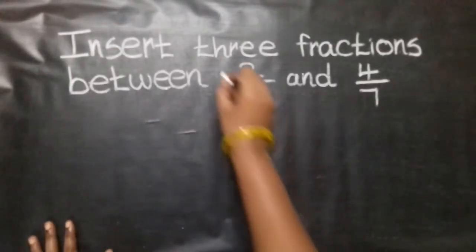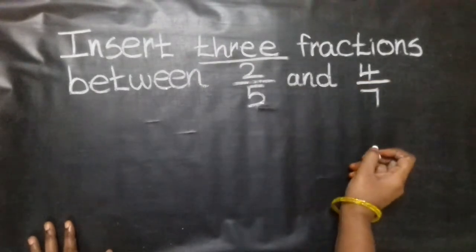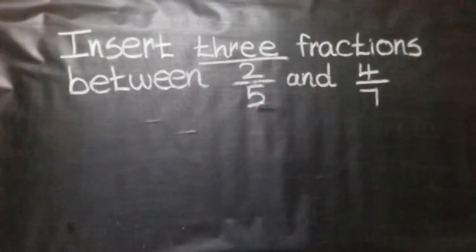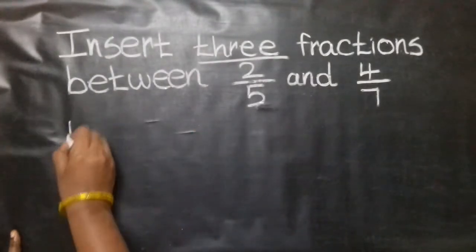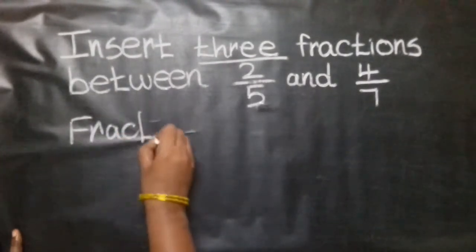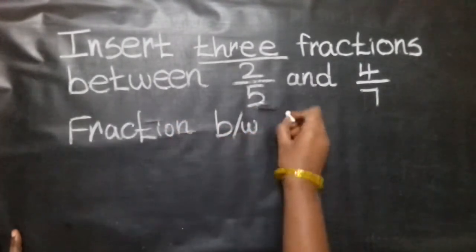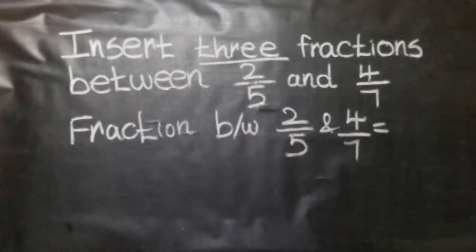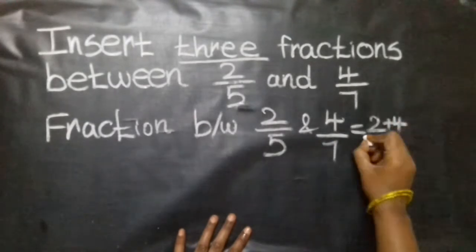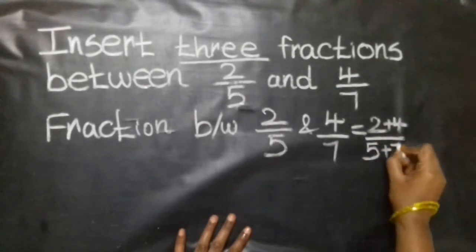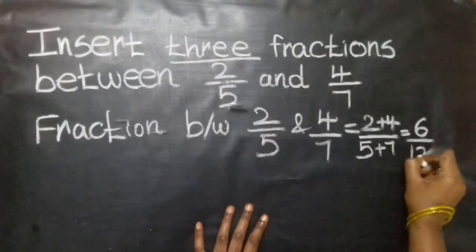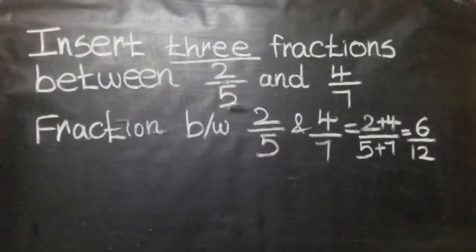Question: Insert three fractions between 2/5 and 4/7. We need to form three fractions between these two. For the first fraction, apply the formula: (2+4)/(5+7) = 6/12 = 1/2. So 1/2 lies between 2/5 and 4/7.